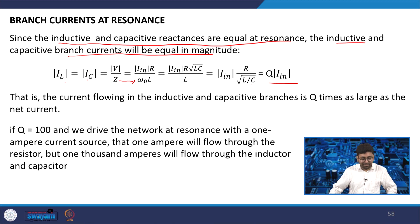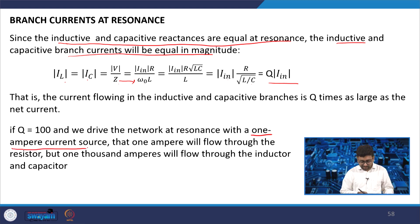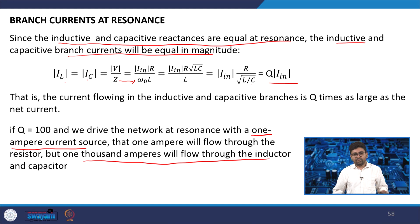For example, if Q = 100 — which is very difficult to achieve on-chip — and you drive the network at resonance with a 1 ampere current source, then 1 ampere flows through the resistor but 100 amperes flow through the inductor. In electrical circuits where the inductor Q is that high, that much current flows through the inductor and capacitor.